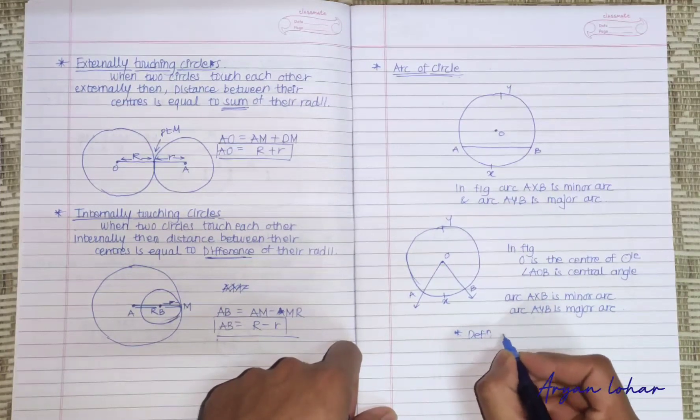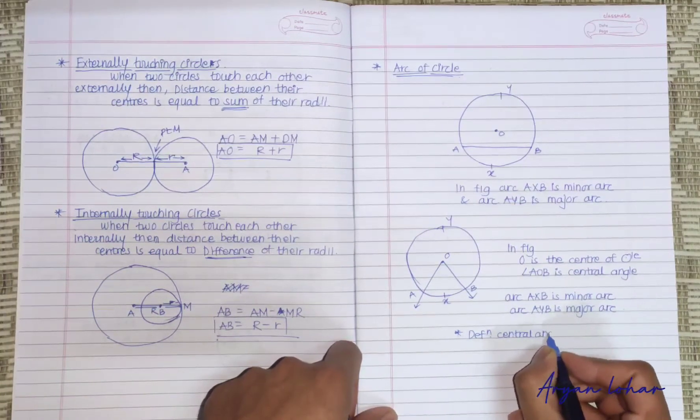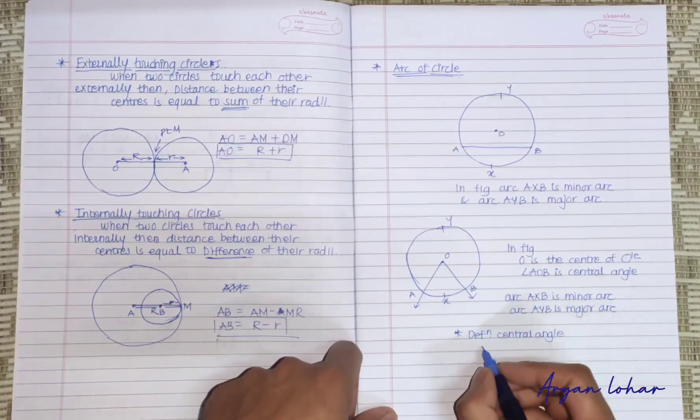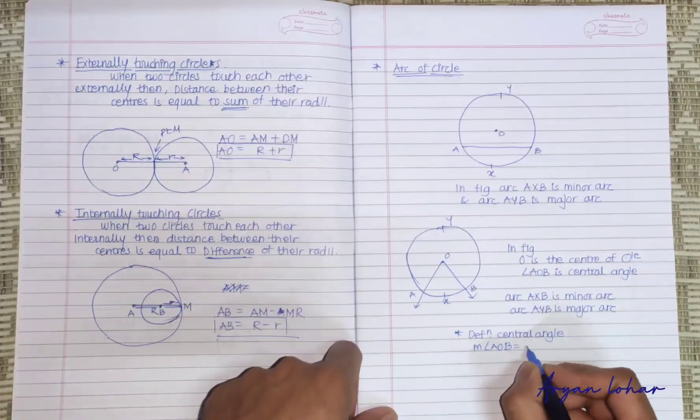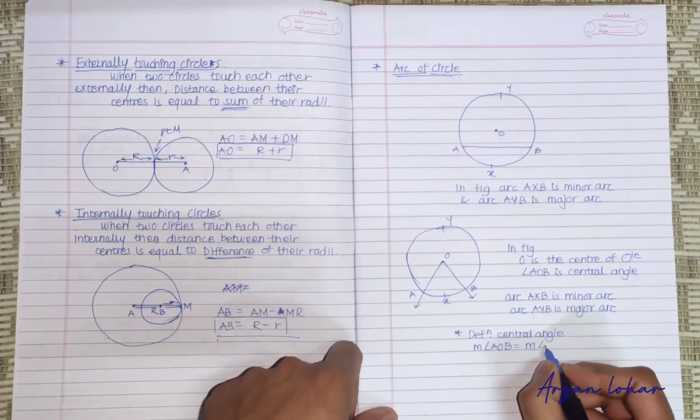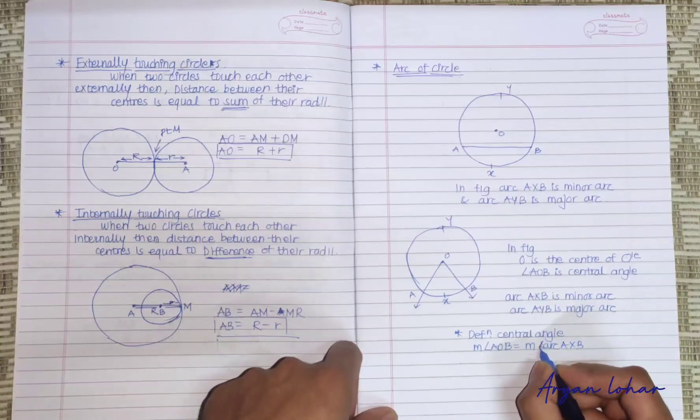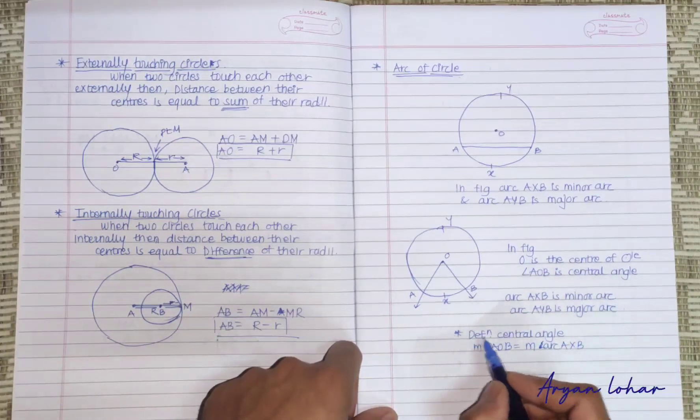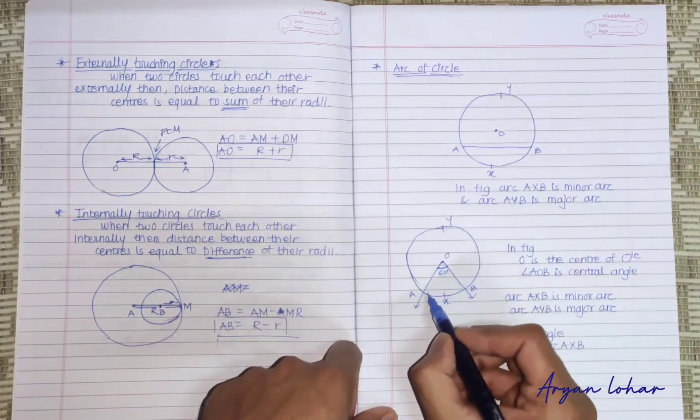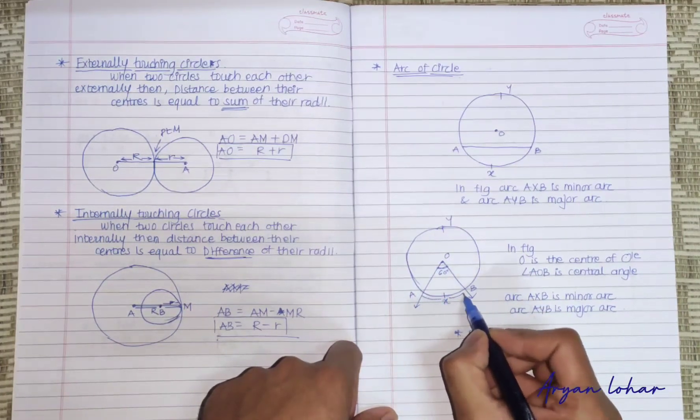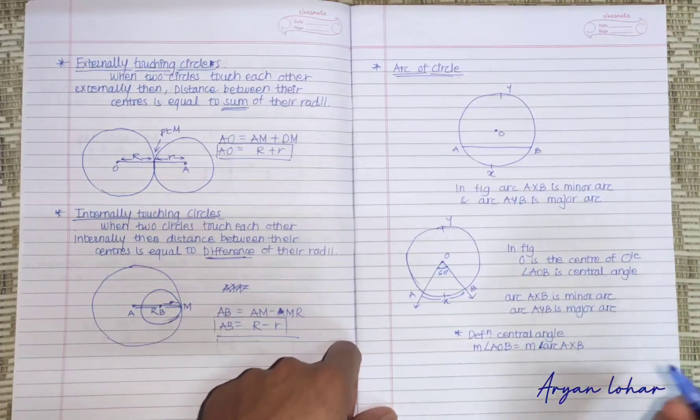Definition of central angle: measure of angle AOB is equal to measure of arc AXB. This is the reason when this is 60 degrees, if this is 60 degrees, this arc too is 60 degrees. Reason is definition of central angle. Got it?